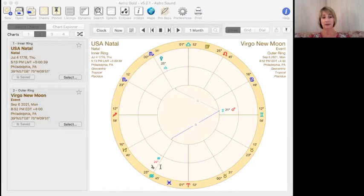The high vibe expression of a grand air trine seeks truth, represented by Aquarius, fairness and equality, represented by Libra, and personal choice, represented by Gemini.